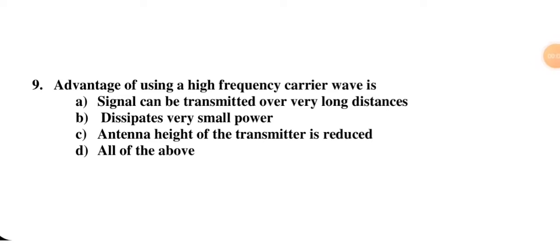Next question: advantages of using a high-frequency carrier wave — signal can be transmitted over a very long distance, dissipates very small power, antenna height of the transmitter is reduced, or all of the above. This relates to the need for modulation, which requires a high-frequency carrier wave. All of the above is correct.